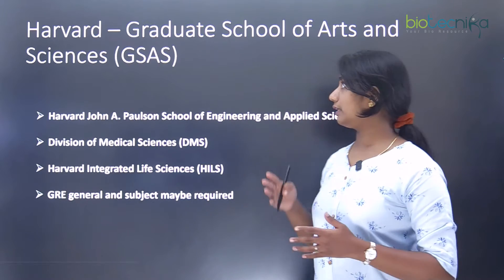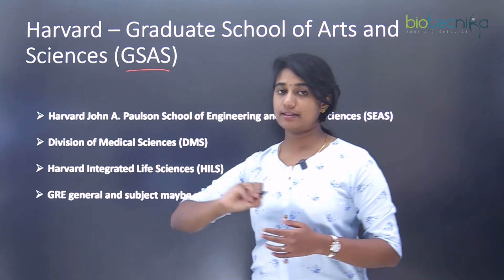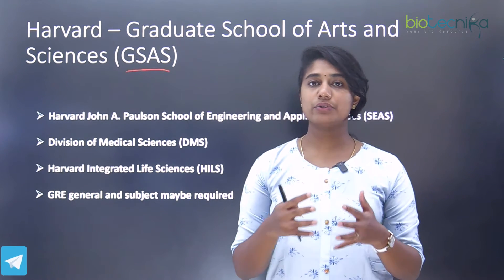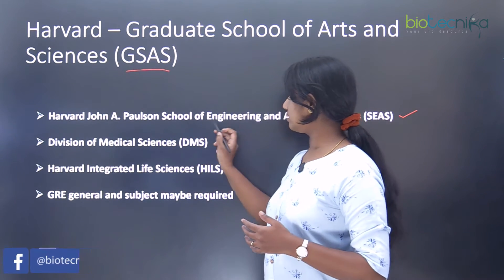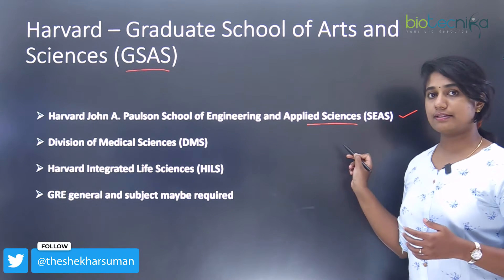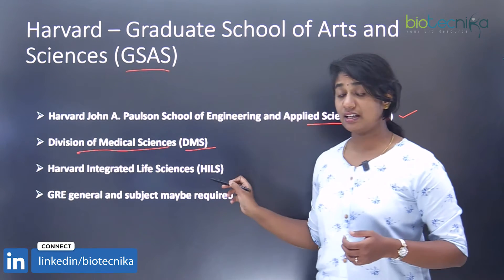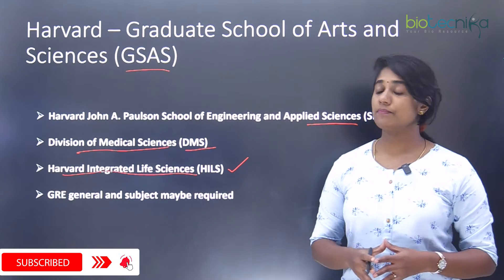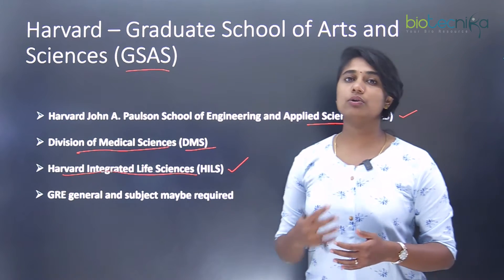This PhD at Harvard University is given by the Graduate School of Arts and Sciences, that is GSAS. In biosciences or life sciences, the PhD is offered through three different departments: first is SEAS, the Harvard John A. Paulson School of Engineering and Applied Sciences; second is the Division of Medical Sciences, DMS; and third is Harvard Integrated Life Sciences, or HILS.